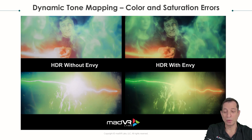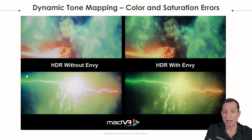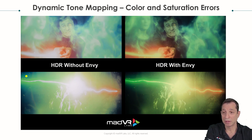Let's take a quick look at what we're talking about for HDR tone mapping. These images on the left are taken as undoctored photos straight out of a projector known for having good HDR tone mapping, as many of them do. But the Envy just takes things to a whole other level.